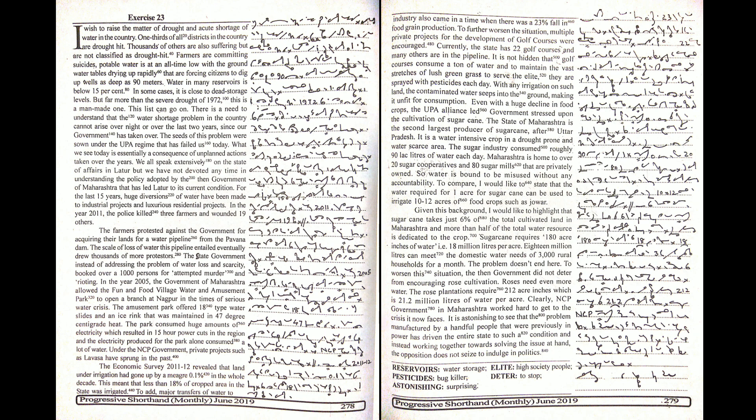Currently, the state has 22 golf courses and many others are in the pipeline. It is not hidden that golf courses consume a ton of water, and to maintain the vast stretches of lush green grass to serve the elite, they are sprayed with pesticides each day. With irrigation on such land, the contaminated water seeps into the ground making it unfit for consumption.